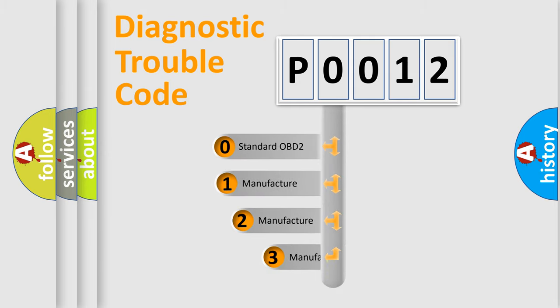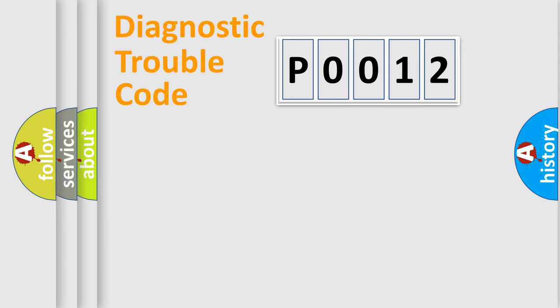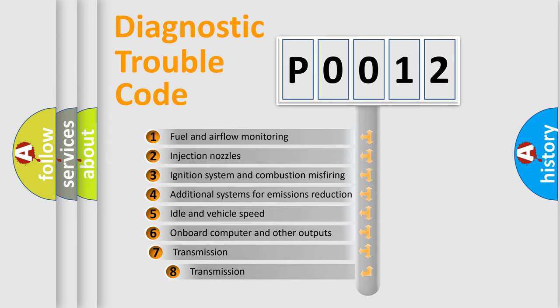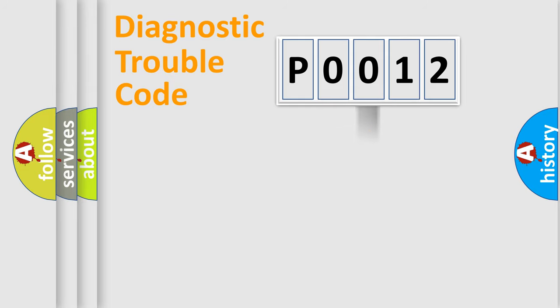If the second character is zero, it is a standardized error. In the case of numbers 1, 2, or 3, it is a manufacturer-specific error. The third character specifies a subset of errors. The distribution shown is valid only for the standardized DTC code.